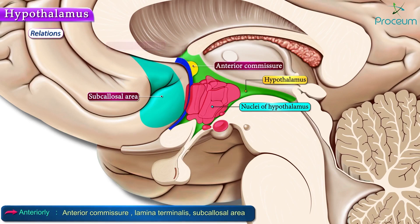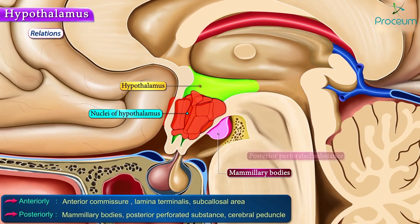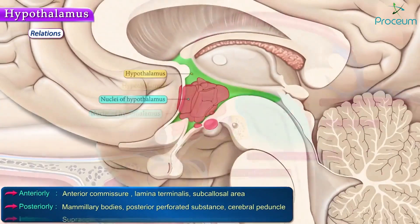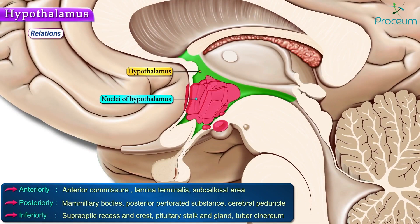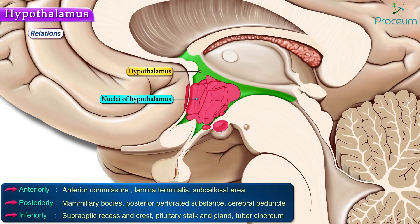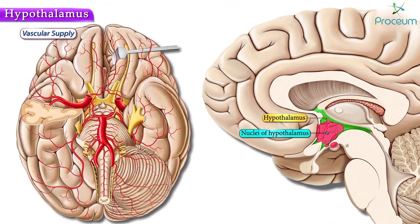Posteriorly, the hypothalamus is bound by the mammillary bodies, the posterior perforated substance, cerebral peduncle, and the cerebral aqueduct of Sylvius. On the inferior aspect, from anterior to posterior, the hypothalamus is bound by the supraoptic recess and crest, the pituitary stalk and gland, and the tuber cinereum. Superiorly, we can appreciate the hypothalamic sulcus, and more superior to it are the thalamus and the choroid plexus of the third ventricle.